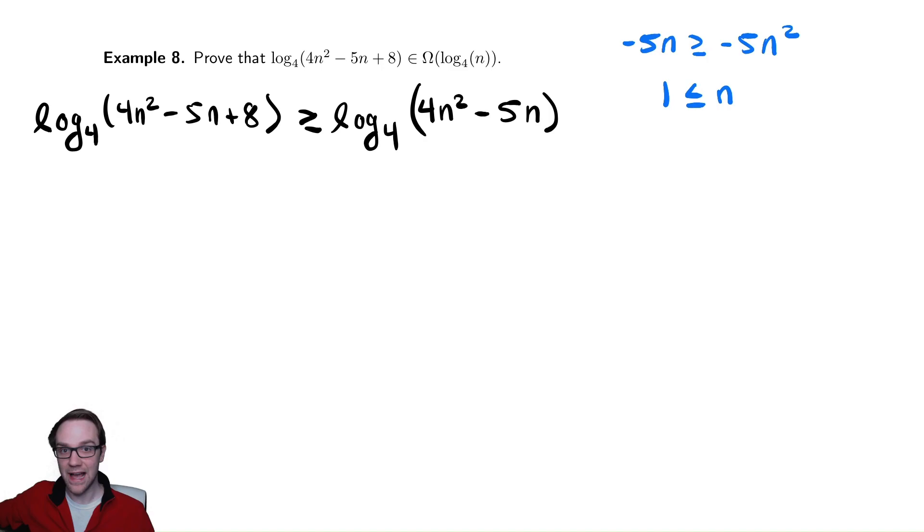I will comment on the fact that the reason that this is true is that we are subtracting a negative value. If we subtract a larger negative value, one that is more negative, like negative 5n² is more negative than negative 5n, then it will become smaller. So, we're subtracting a larger value. Therefore, the entire expression will become smaller. Let's try this and see where it leads us.